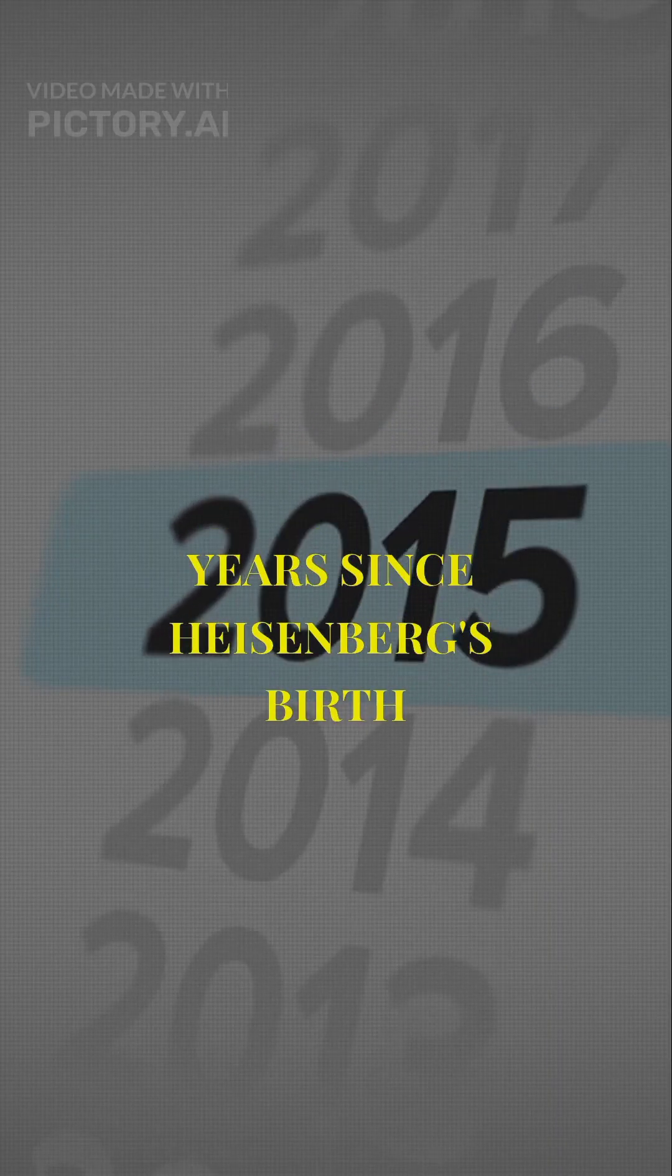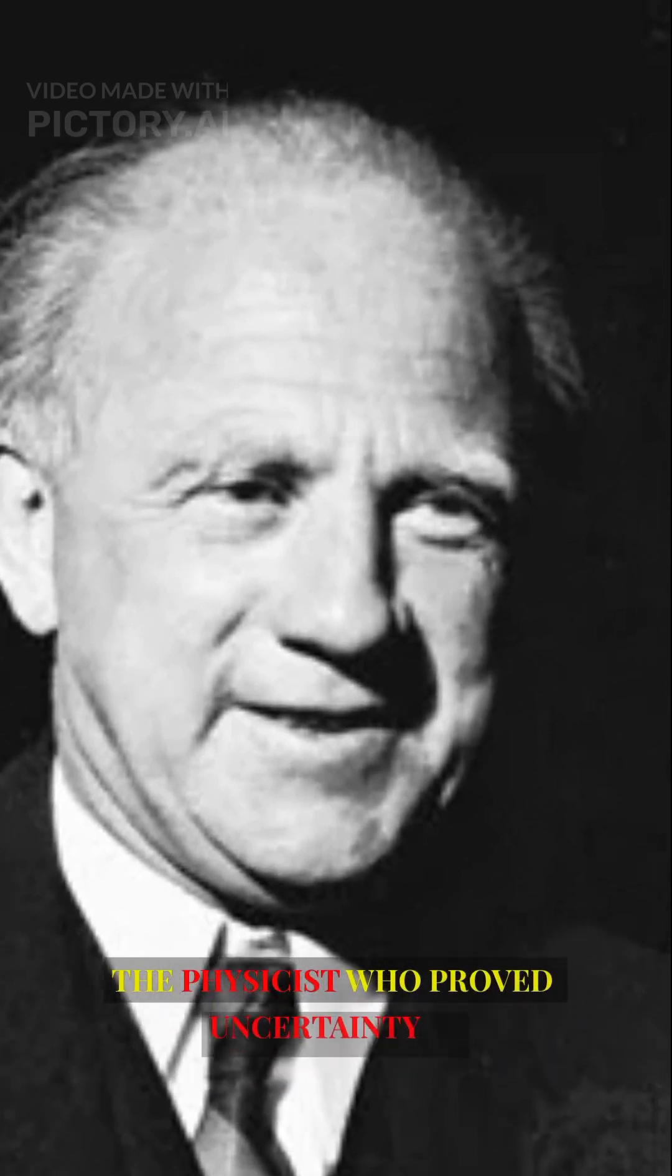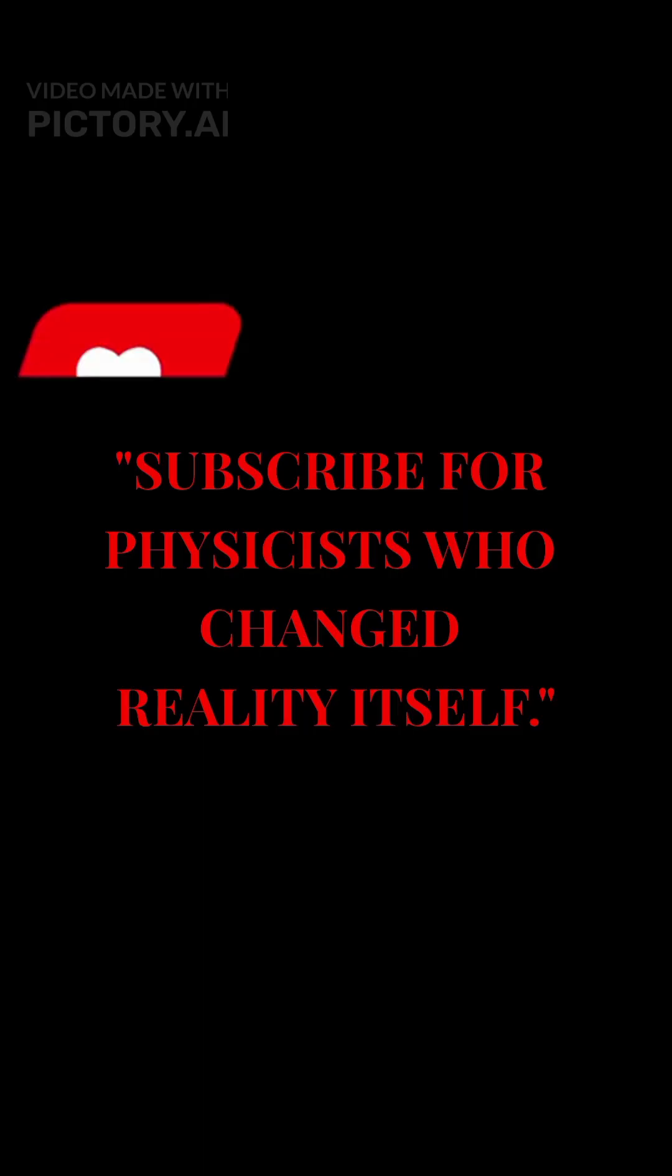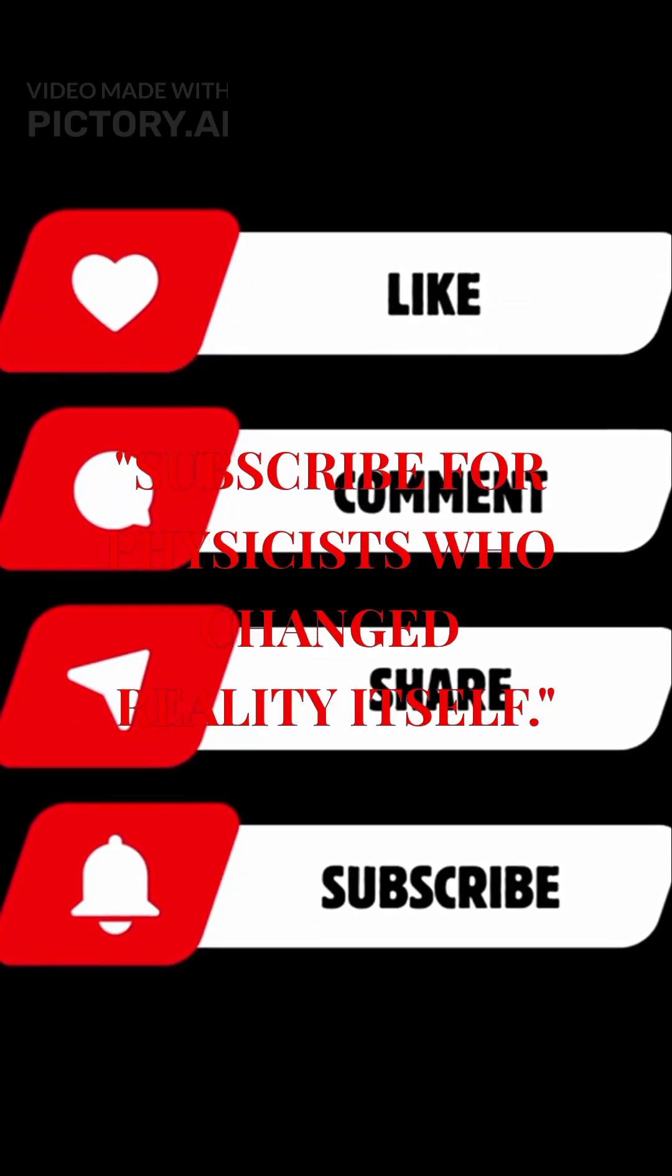123 years ago, the physicist who proved uncertainty is fundamental. That's December 5th, 1901. Subscribe for physicists who changed reality itself.